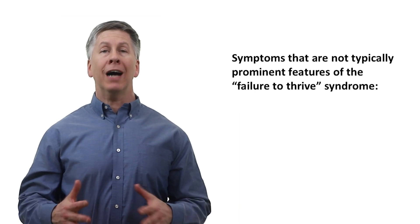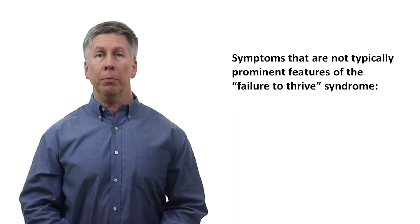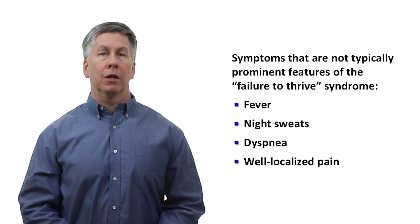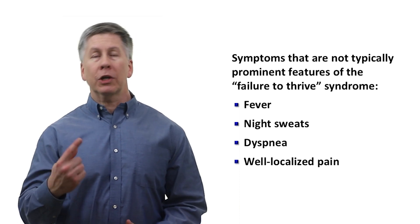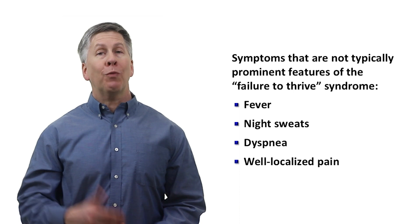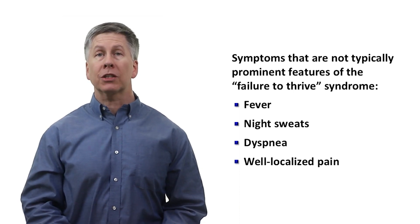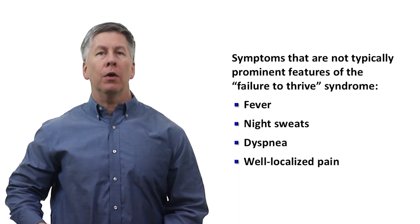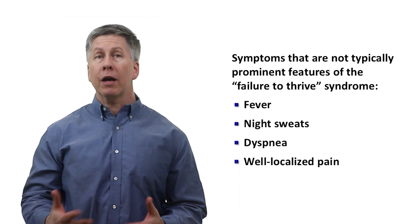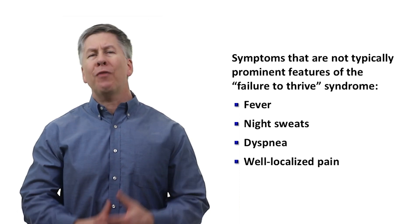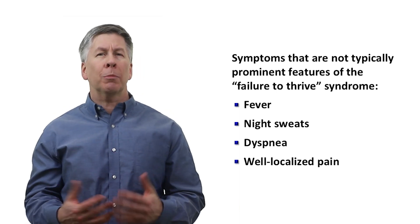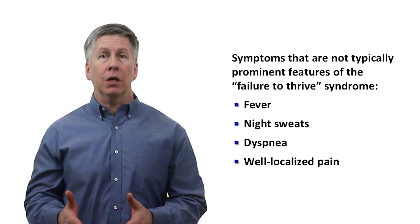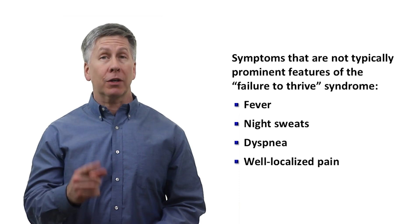Symptoms that are not typically prominent features of the failure to thrive syndrome include fever, night sweats, dyspnea, and pain that is well localized. By well localized, I don't mean isolated to one particular spot necessarily, but rather if the clinician asks where the pain is located, the patient can identify one or more very specific locations on their body. When pain occurs in patients with failure to thrive, it is more typically a vague, diffuse, achy kind of pain, more similar to the symptom of malaise. If a patient's presentation has a prominence of one of these symptoms, I would take a closer look specifically at that particular symptom.